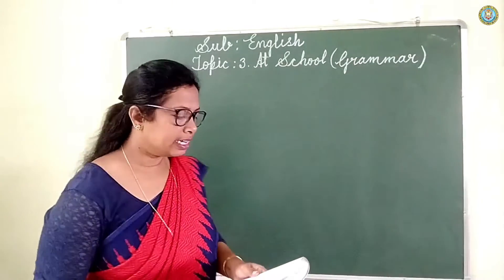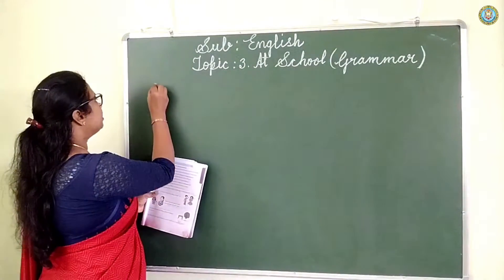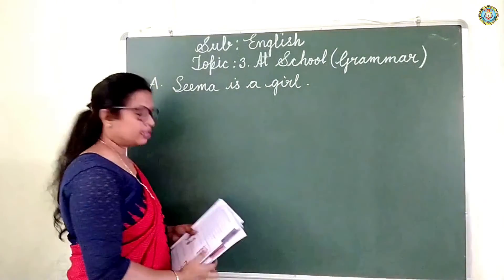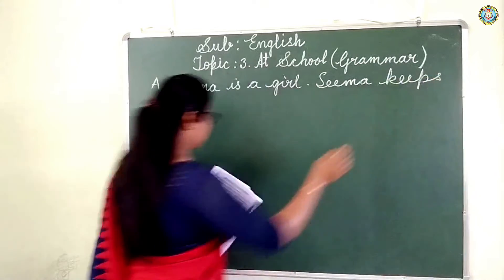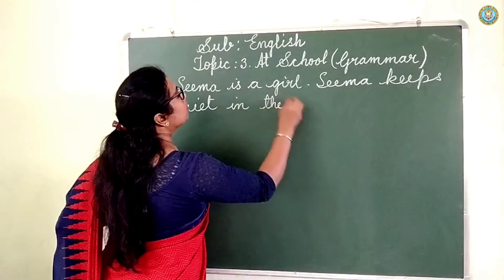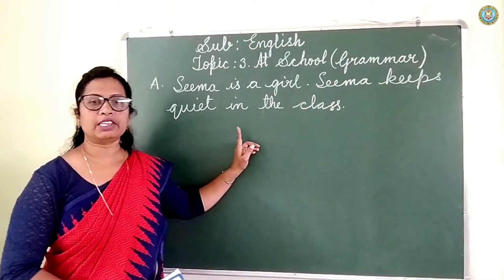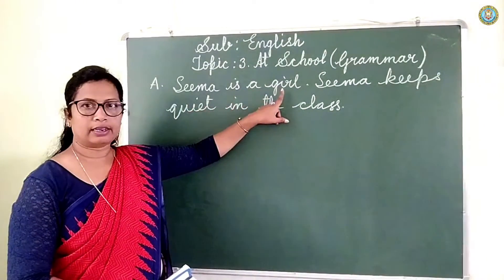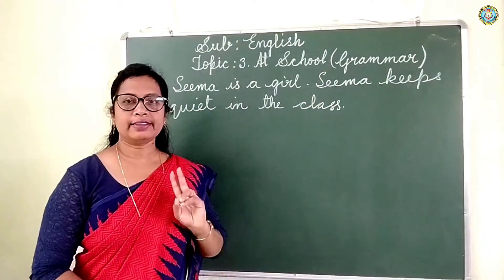See, children, I will write the sentence on the board. All of you see carefully. The first sentence: 'Sima is a girl.' Sima is quiet in the class. Here you are seeing two sentences. The first sentence is 'Sima is a girl.' Another one is 'Sima keeps quiet in the class.'